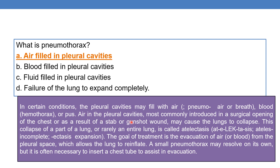Pneumothorax is most commonly caused by a surgical opening — air may be introduced into the pleural cavity during an operation, or as a result of a stab or gunshot wound. Because of pneumothorax, the lungs may collapse. This collapse of a part of the lung, or rarely an entire lung, is called atelectasis.